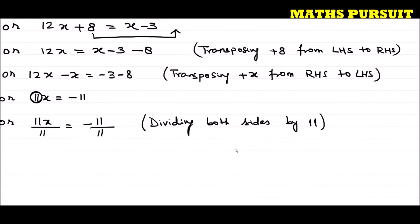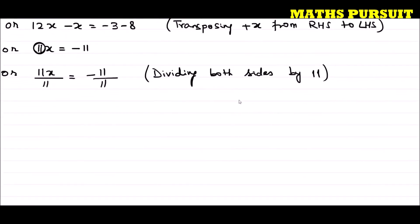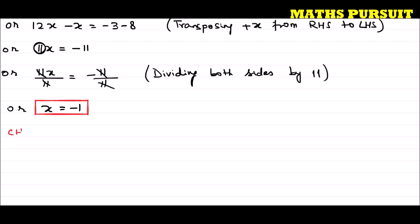After dividing both sides by 11, the 11s cancel out and we get x = −1. This is our answer. The question asked us to solve the given equation and we found the value of x is −1. Now let us do a check to verify whether our answer is correct.